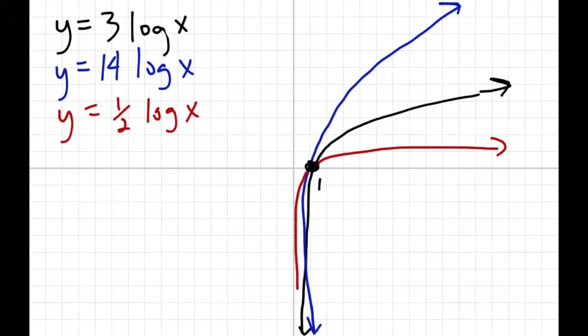So our x-intercept is always still 1. And the rest of the graphs, they always go down, follow the y-axis on the bottom, and the top just sort of changes depending on the size of that number.